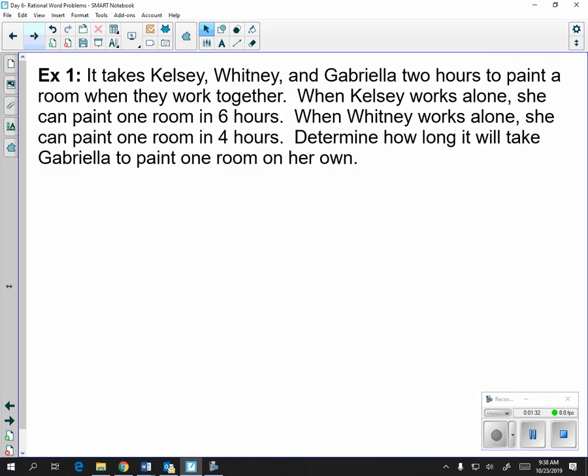So in an example, it takes Kelsey, Whitney, and Gabriella. That's three people. So off the bat, I know that I should have three fractions. So one fraction, two fraction, three fraction, and equals however many jobs they have.